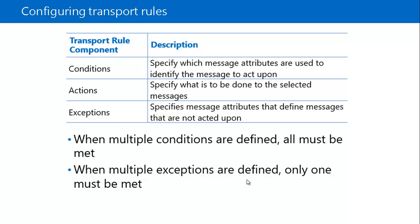If the email message matches the condition value, Exchange Server applies the rule as long as the condition does not match an exception — because if it matches an exception, the rule will not apply. You can configure multiple transport rule conditions to narrow the rule scope to very specific criteria. You can also decide not to apply any condition, which means the transport rule applies to all messages.